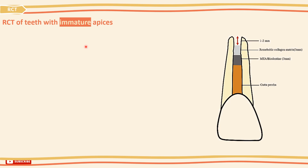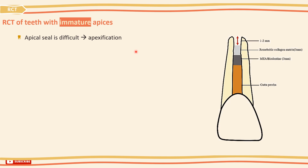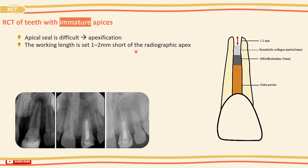For root canal treatment in the immature root apex, the achievement of an apical seal is difficult since the tooth has an open apex, and treatment should aim to produce apexification — meaning inducing a calcific barrier at the apex of a non-vital tooth with incomplete root formation. Under a rubber dam, the necrotic pulp should be extirpated and the working length set 1–2 mm shorter than the radiographic apex.